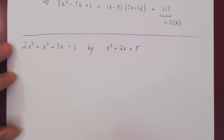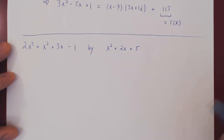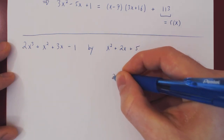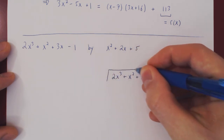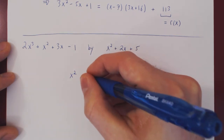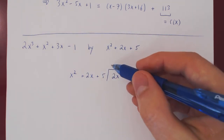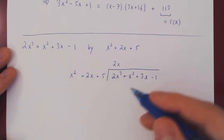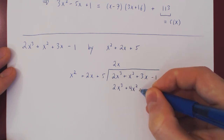We'll go with 2x cubed plus x squared plus 3x minus 1, and divide by x squared plus 2x plus 5. I'll write this one using English high school notation. What times x squared is 2x cubed? Well, 2x. Multiply out by 2x — we get 2x cubed plus 4x squared plus 10x. We subtract: these two cancel. x squared minus 4x squared is negative 3x squared.